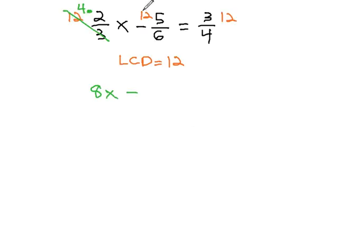Minus 12 over 6 reduces to 2, and so we have 2 times 5, which is 10, equals 12 over 4 reduces to 3, and we have 3 times 3, which is 9.